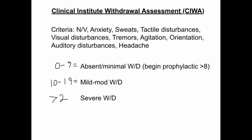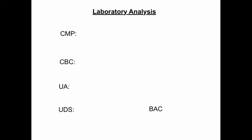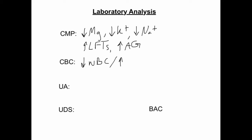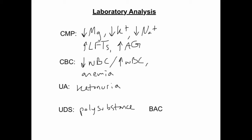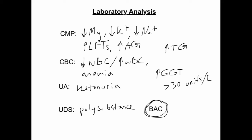Laboratory analysis of the alcoholic may reveal the following. A complete metabolic panel may show low magnesium, low potassium, low sodium, increased liver function tests especially ALT, and an increased anion gap. CBC may reveal decreased or increased white blood cells and anemia. Urinalysis may show ketonuria, and urine drug screen may show polysubstance use. Increased triglycerides and increased gamma glutamyl transferase, or GGT, are relatively good indicators of alcoholism. The most definitive biomarker for chronic alcoholism is carbohydrate-deficient transferrin, or CDT, where a value greater than 20 units indicates greater than 60 mg per day over 7-10 days of alcohol ingestion.